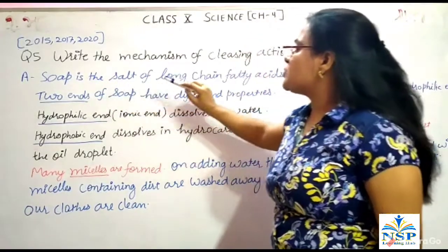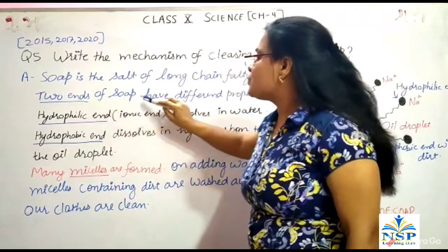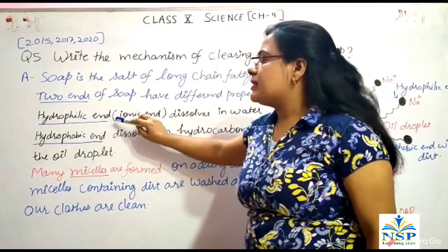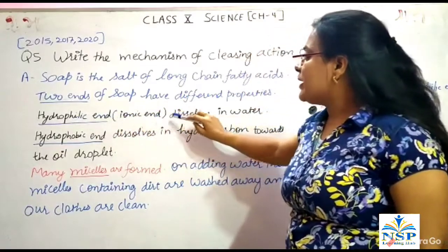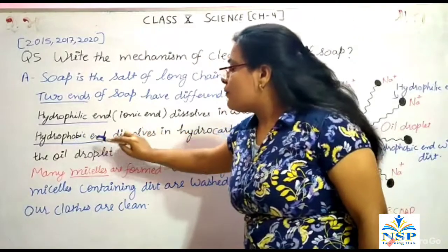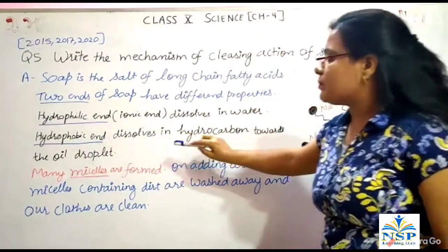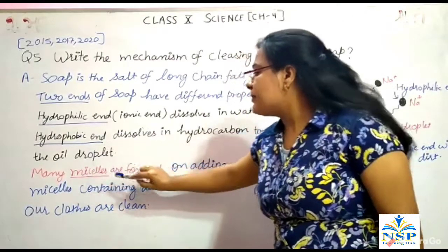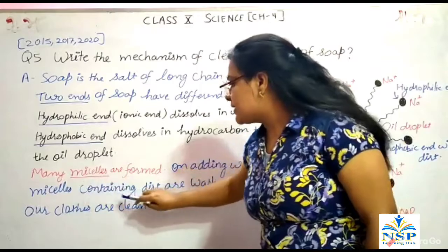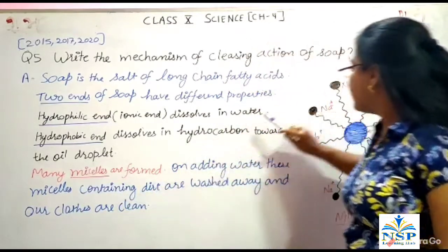Soap is the salt of long-chain fatty acids. Two ends of soap have different properties. The hydrophilic end is water-loving, ionic, and dissolves in water. The hydrophobic end dissolves in hydrocarbon and is directed towards the oil droplet. Many micelles are formed on adding water. These micelles containing dirt are washed away, and our clothes are clean.